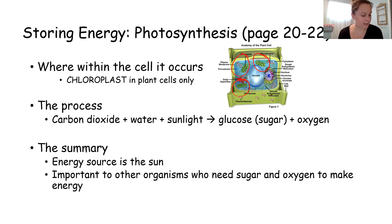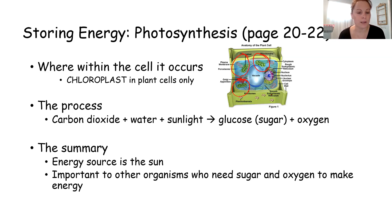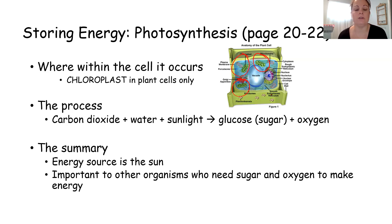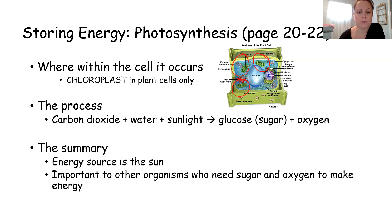On page 22 in the review book, they provide a really good summary. The source of the energy for photosynthesis is the sun — sunlight is the original source of energy for all chemical processes in one way or another. Photosynthesis is important to other organisms because it makes the sugar we need to make energy, and it provides the oxygen we need to make energy.